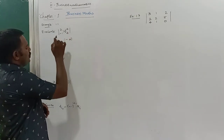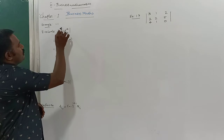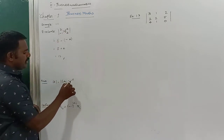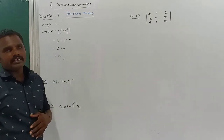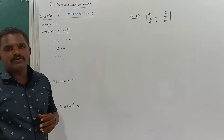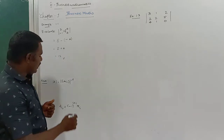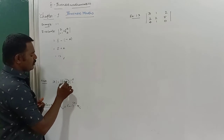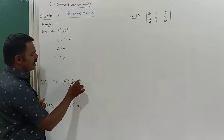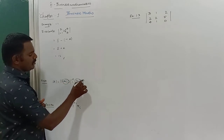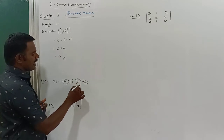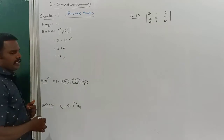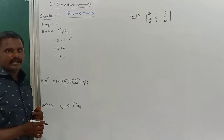So 2 and 4 — each element of a determinant is called a minor. Each and every element is called an element, known as Aij. That is A11 means first row, first column. A12 means first row, second column. Each and every element is called a minor.